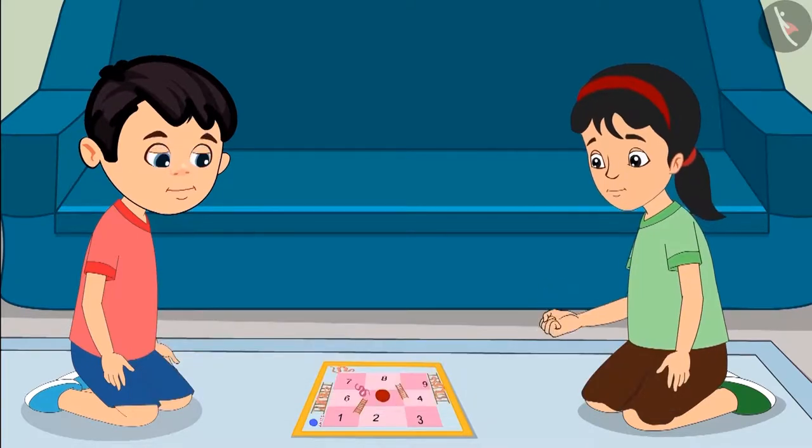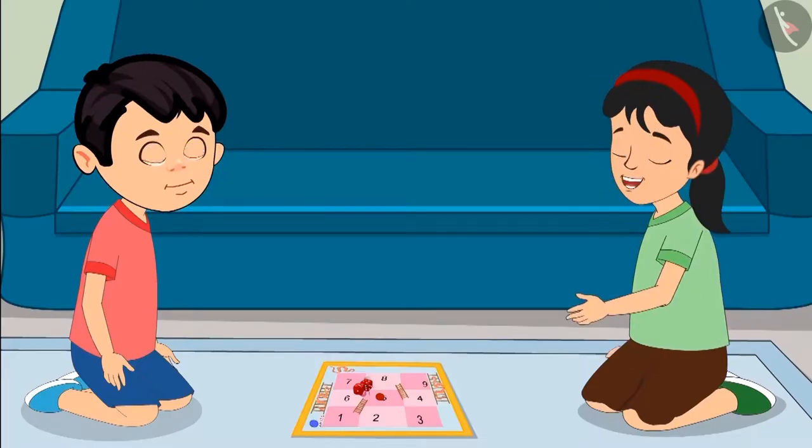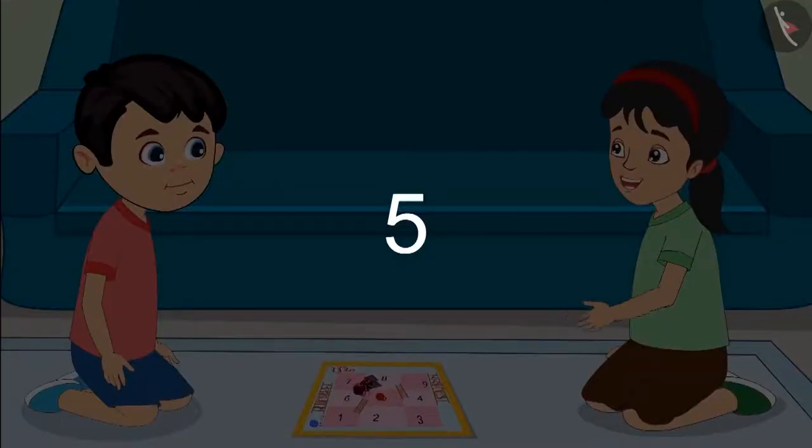Now Pinky rolls both the dice. 5 comes on the first dice. And 4 comes on the second dice. It is 5 and 4. First, I am moving my piece 5 places forward.